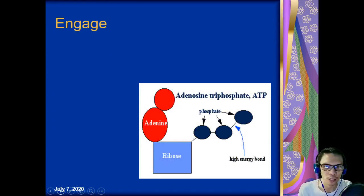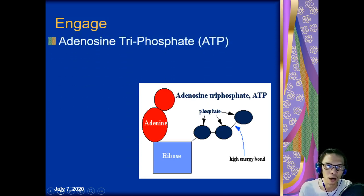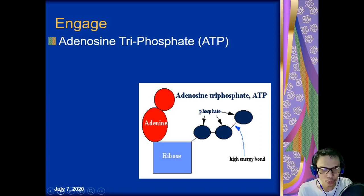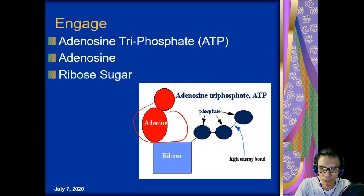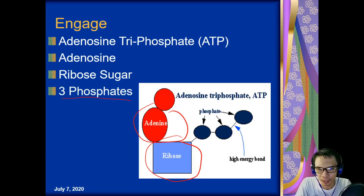Before we start, let me introduce you to the energy currency of our cell. The energy currency of our cell is not in calories, but instead it is in what they call ATP — adenosine triphosphate. This is the energy that we need in order to do our daily activities. It contains adenosine, a ribosugar as its backbone, and 3 phosphates. The number of phosphates changes — it can be 2 or 3 — depending on whether the adenosine triphosphate has released its energy.